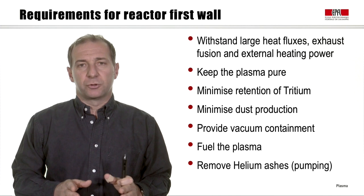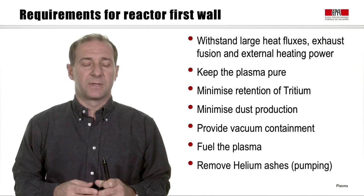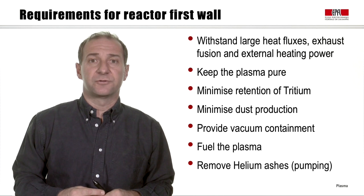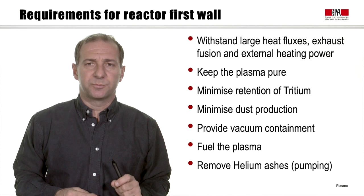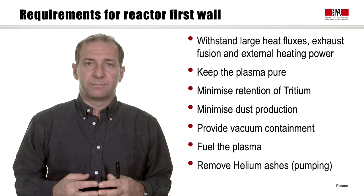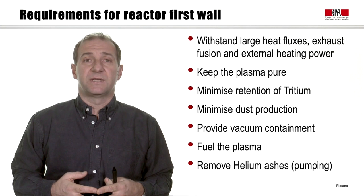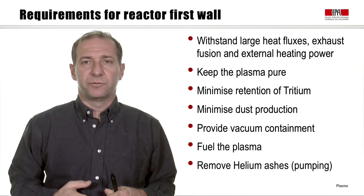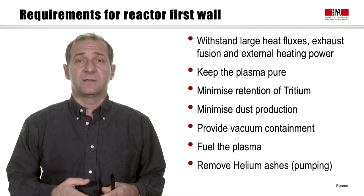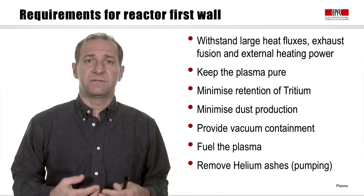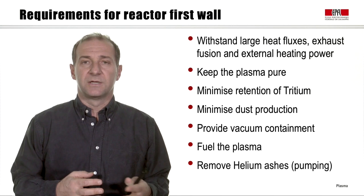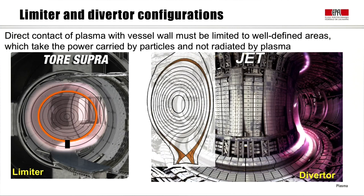To briefly recap: the wall has to withstand large heat fluxes and exhaust both fusion-produced and external heating power, keep the plasma pure, and minimize tritium retention. There are other constraints: the walls must minimize production of dust, be compatible with providing vacuum containment, be compatible with fueling the plasma by injecting particles that form the plasma fuels once ionized, and contribute to pumping the helium ashes produced by the fusion reaction.